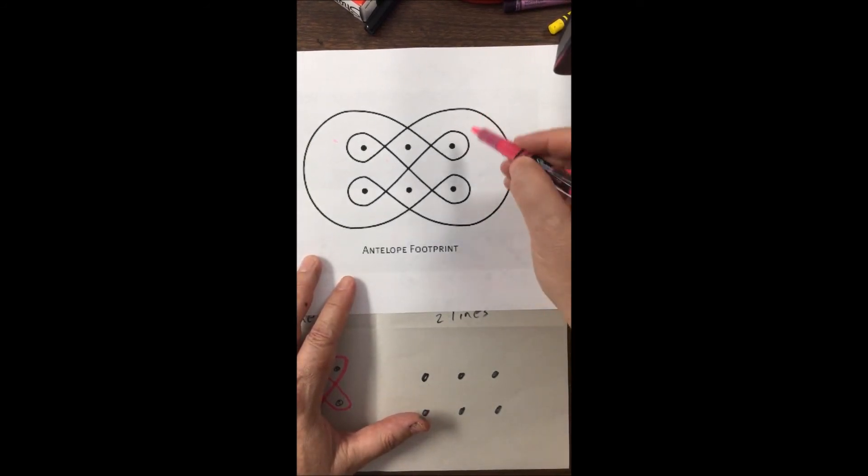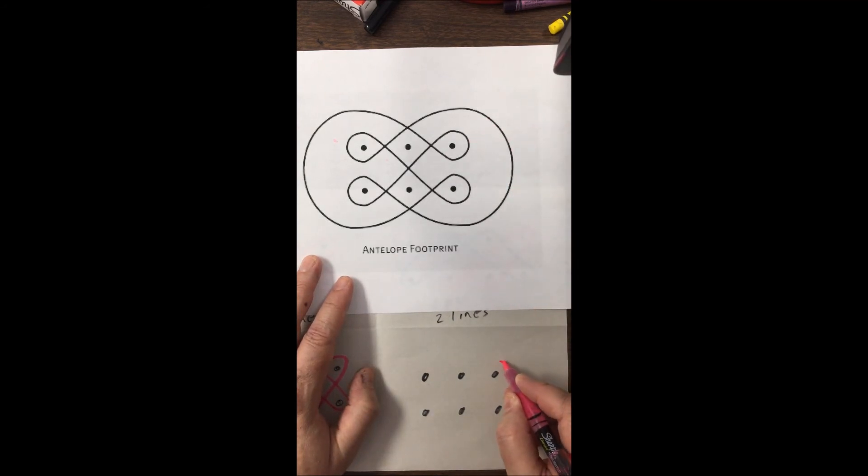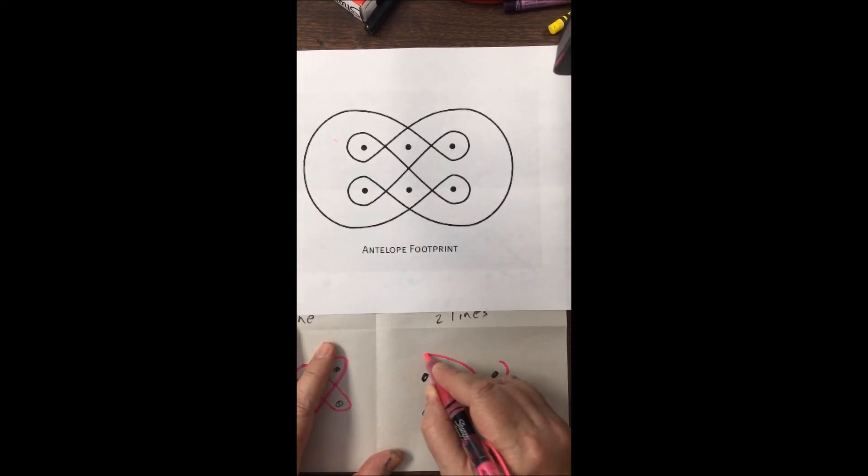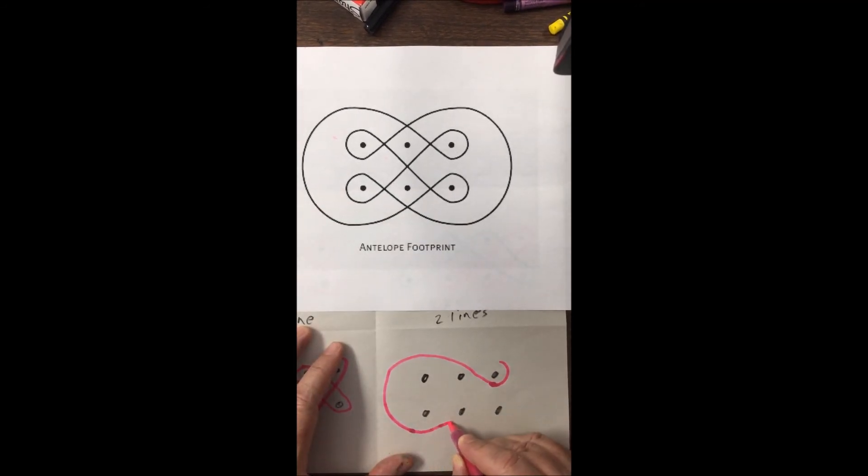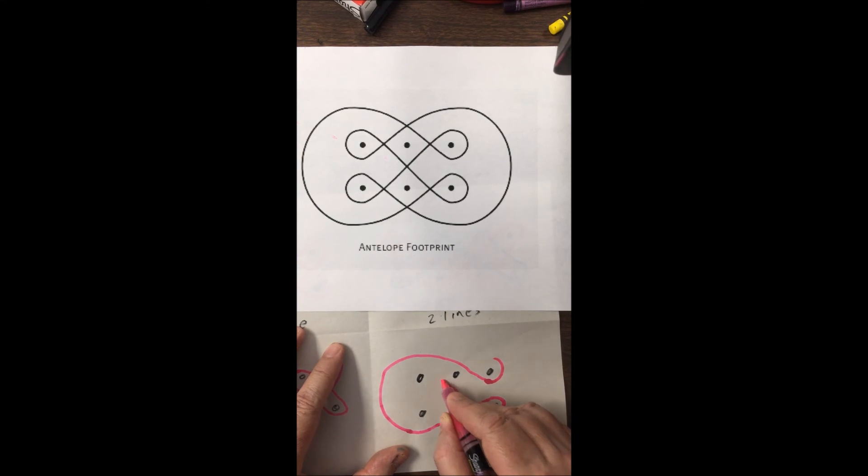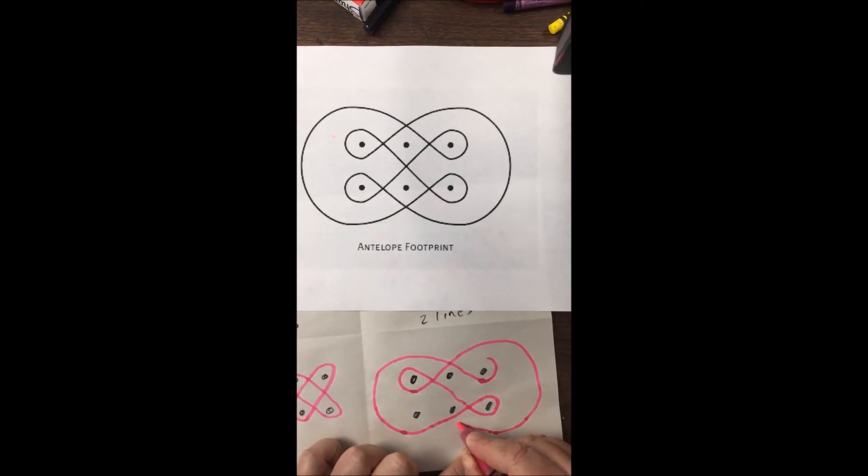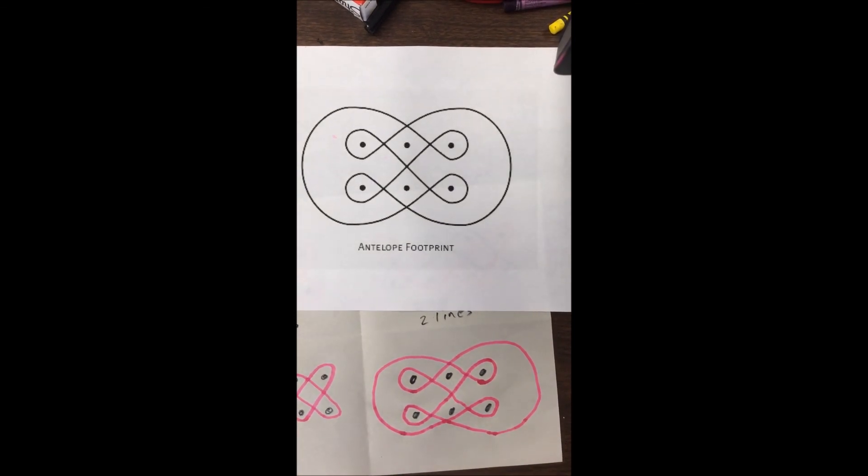You can start anywhere. I'm going to start on this side over here. So this goes around. And then notice how it comes all the way over on the left. And this hooks around to the bottom one. Now we go over to the right side. And then up to finish it. So that is the antelope footprint.